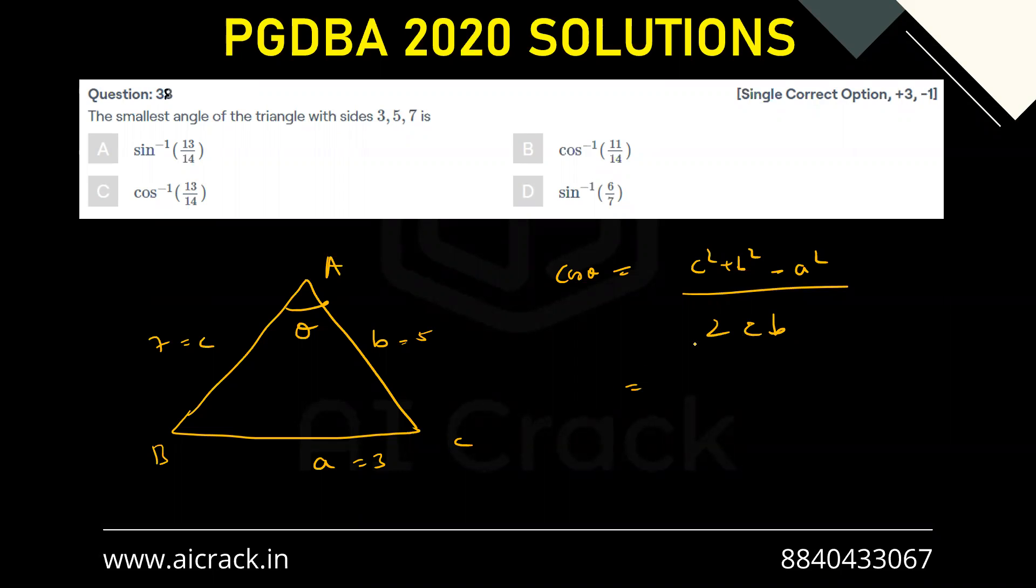So that would give me C squared would be 49, plus B squared would be 25, minus A squared would be 9, divided by 2 times 7 times 5. So that is 70. And this becomes 49 minus 9, 40 plus 25, that is 65 by 70.